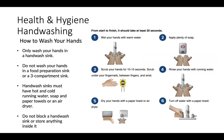How to wash your hands. Only wash your hands in a hand wash sink. Do not wash your hands in a food preparation sink or a three compartment sink. Hand wash sinks must have hot and cold running water, soap and paper towels or an air dryer. The temperature of the water should be above 100 degrees, close to 110 degrees. Do not block a hand wash sink or store anything inside of it. From start to finish, hand washing should take at least 20 seconds. Wet your hands with warm water, apply plenty of soap, scrub your hands for 10 to 15 seconds — scrubbing under your fingernails, between your fingers and your wrist. Rinse your hands with running water, dry with a paper towel or air dryer. Turn off the water with a paper towel. Do not contaminate your clean hands with the faucet.